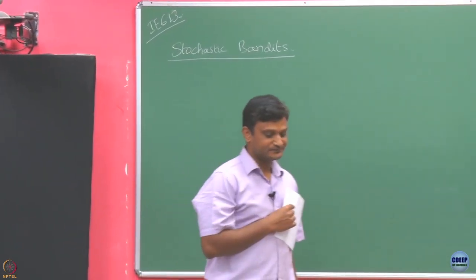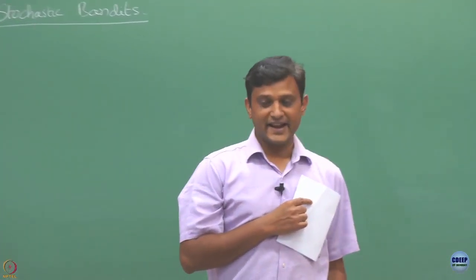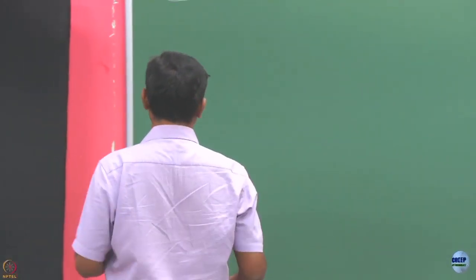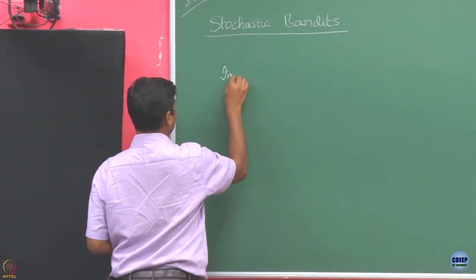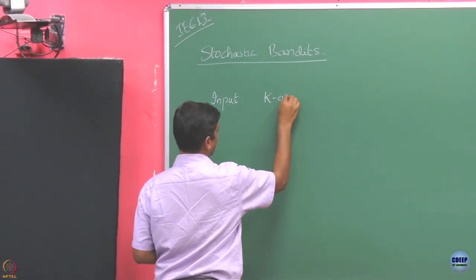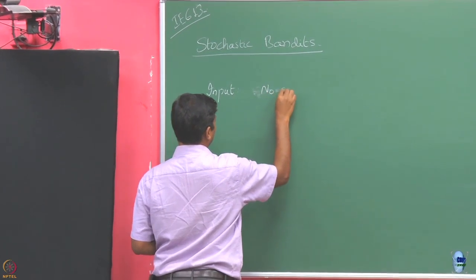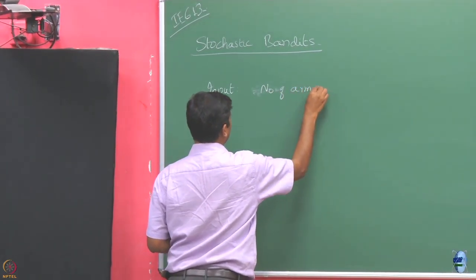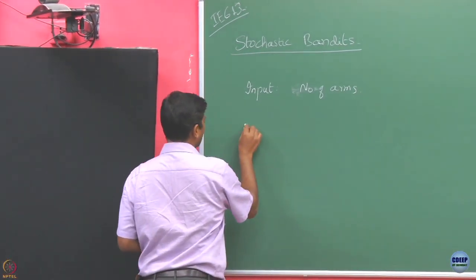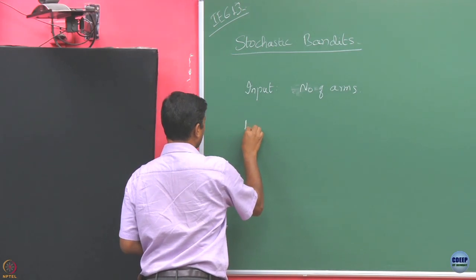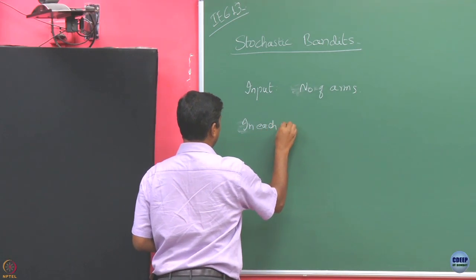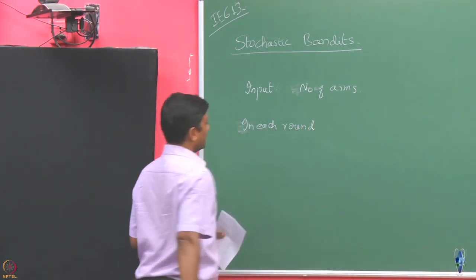Now, how does the interaction happen? We are going to do this in the stochastic bandit setting. Here, the template is like an input: you specify how many arms there are, and in each round an interaction takes place.